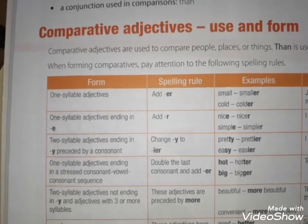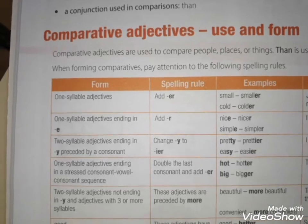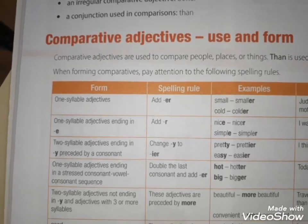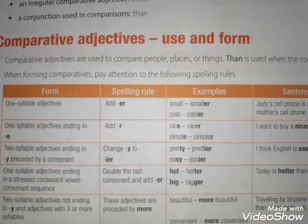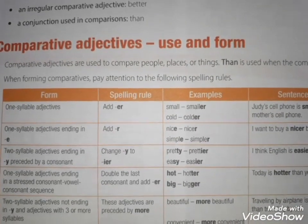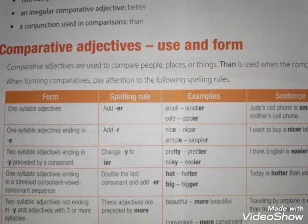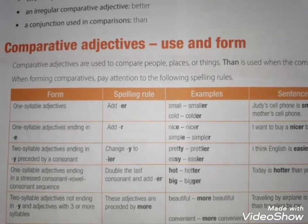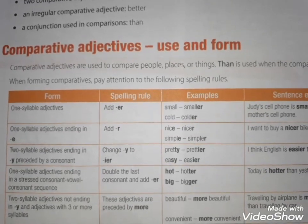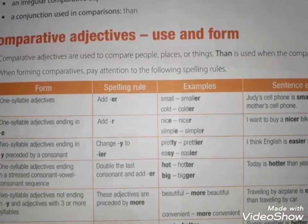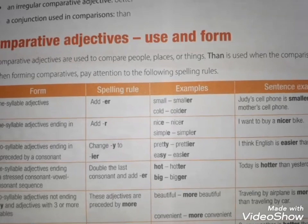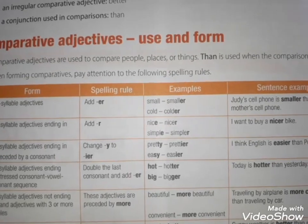Adjetivos que terminam em E, a gente somente acrescenta o R. Nice, simpático → nicer, mais simpático que. Simple, simples → simpler, mais simples que.